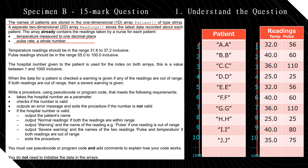The names of patients are stored in the 1D array called 'patient' of type string. A separate 2D array 'readings' stores the latest data recorded about each patient — the array already contains the readings taken by the nurse for each patient. We have the temperature, which is measured to 1 decimal place, and the pulse rate, which is a whole number. Temperature readings should be in the range 31.6 to 37.2 inclusive, and pulse readings should be in the range 55 to 100 inclusive.